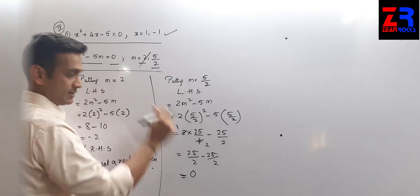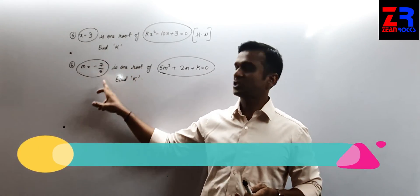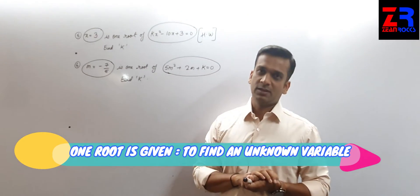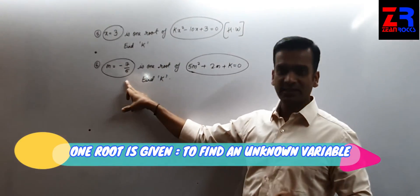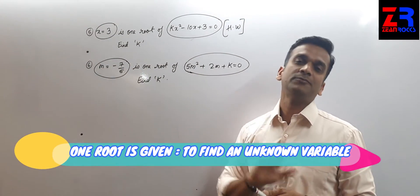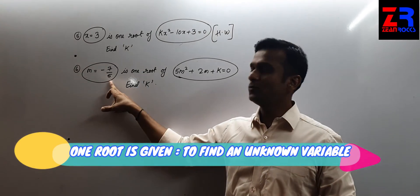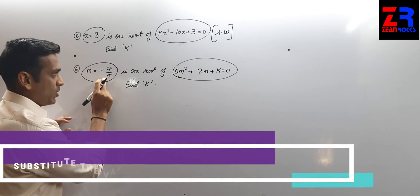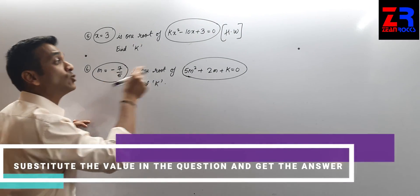The answer is 0, which equals the right-hand side. Coming to the last part of exercise 2.1, there are two questions: question 5 and question 6. Both questions are similar to each other. For question 5: x = 3 is one root of the equation, find k. You will do question 5 as homework. For question 6: m = −7/5 is a root of the equation, find k.